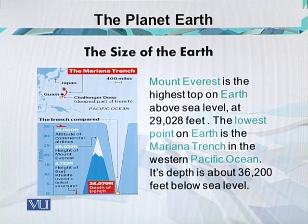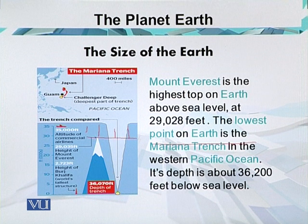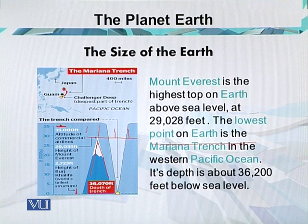The most prominent features on Earth are its highest and lowest points. Mount Everest is the highest peak on the surface of the Earth at 29,028 feet above sea level in Nepal. The lowest point on Earth is the Mariana Trench in the western Pacific Ocean, with a depth of about 36,200 feet below sea level, south of the Japanese islands.